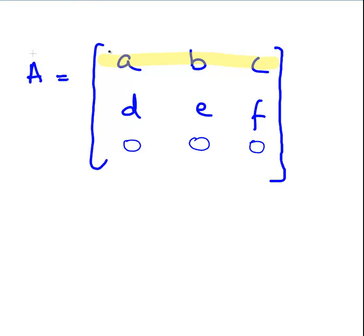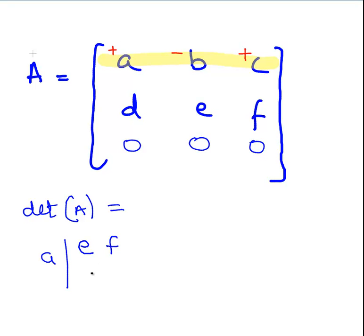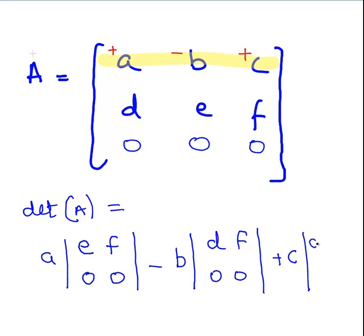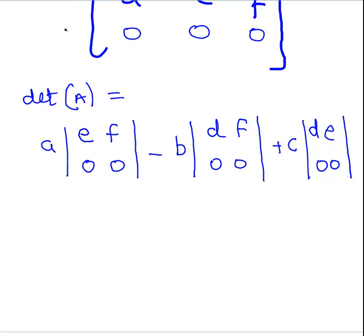I'm not going to show how to get the determinant of a 3x3 matrix other than to say that is the elements of the sign array. The determinant of A is going to be: A times the determinant of its minor sub-matrix, minus B times the determinant of its sub-matrix (D, F, 0 and 0), plus C times the determinant of its sub-matrix. Now let's work it out. A times (E times 0 minus F times 0).